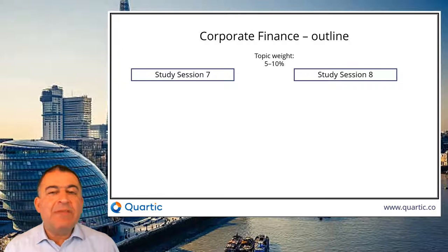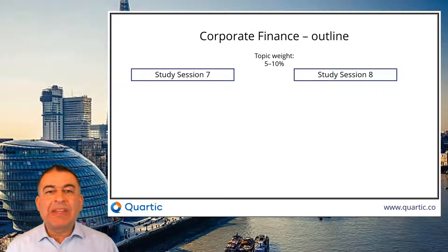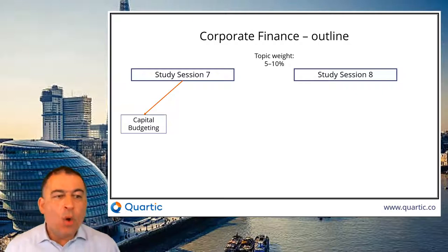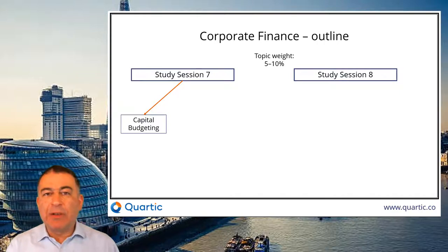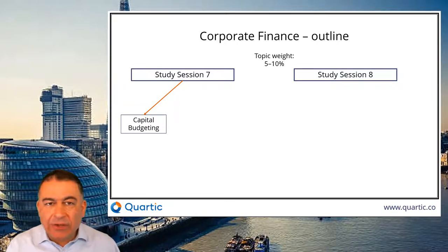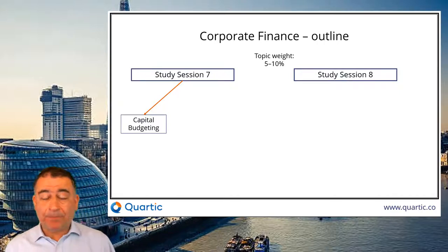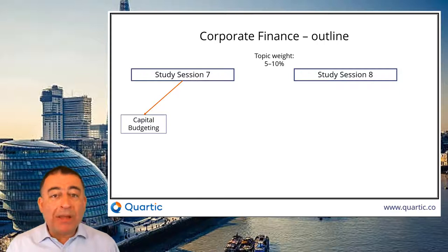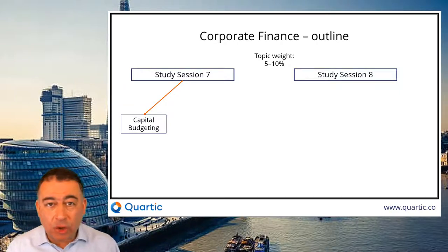We've got five readings here. You've covered a lot of the basics at Level 1 — we extend this very much at Level 2. We start off with capital budgeting. You looked at NPV and IRR at Level 1. We're now looking at far more complex areas of cash flow forecasting. For a multi-year project, we look at tax calculations and from that arrive at net cash flows, from which we can do our NPV. It's a very detailed reading with quite a lot of calculations that are hopefully quite achievable.